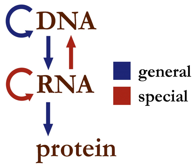Direct translation from DNA to protein has been demonstrated in a cell-free system, i.e., in a test tube, using extracts from E. coli that contained ribosomes but not intact cells. These cell fragments could synthesize proteins from single-stranded DNA templates isolated from other organisms, e.g., mouse or toad, and neomycin was found to enhance this effect. However, it was unclear whether this mechanism of translation corresponded specifically to the genetic code.